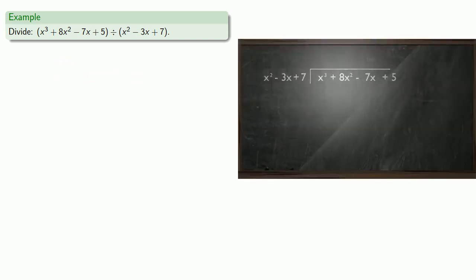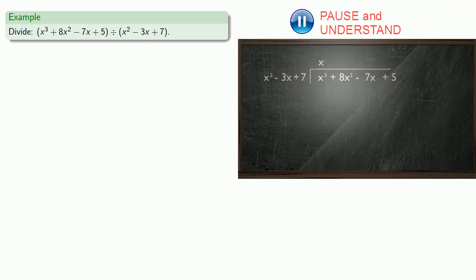We'll set up the division. First we want to get rid of the x cubed term. Since my divisor is x squared, if I multiply it by x, I'll get an x cubed term. Multiplying our divisor by x gives us x cubed minus 3x squared plus 7x. We want to subtract this, so we'll change the signs and add.